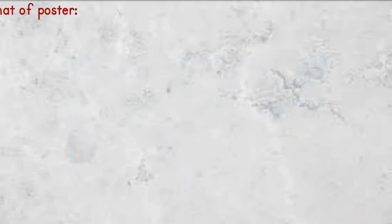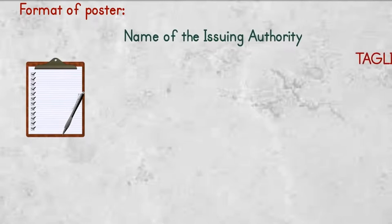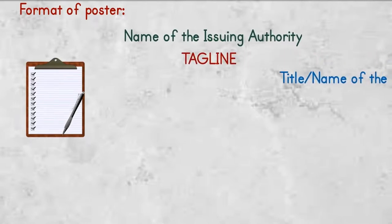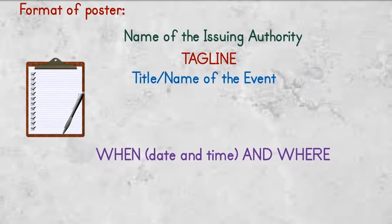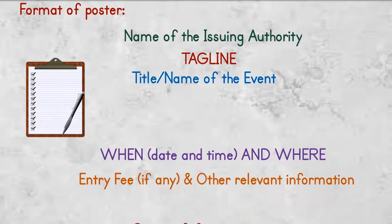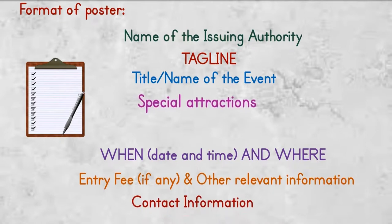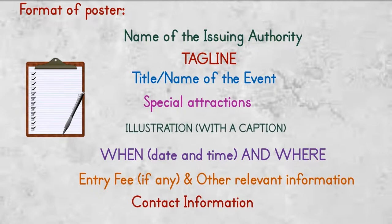In brief, let's see the format to draft a poster. First, the name of the issuing authority, then the tagline, and the title or name of the event. When — include the date, day, and time. And where — the venue to be included. If any entry fee applies, include it, along with other relevant information. Contact information should be added for any inquiries. Special attractions like pictorial illustrations can be added, and illustrations with captions can also be included to make it an attractive poster. There is no fixed placement for these elements.